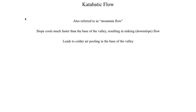One important consequence of katabatic flow patterns is that this tends to result in colder air collecting in the base of a valley, which has very profound consequences for agricultural reasons. One of the biggest hazards for agriculture is what's often referred to as a freeze event, where the temperature gets below freezing. If you've got vegetation that is sensitive to sub-freezing temperatures, then the crops could freeze to death.